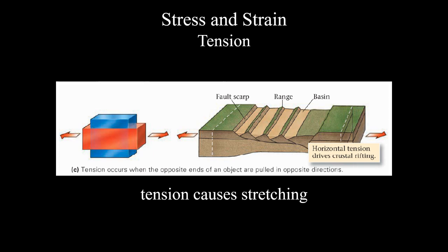With a divergent plate boundary and tensional stress, the opposite occurs: the crust stretches and thins in the middle, accommodated by normal faulting. You still get mountain ranges forming — not by uplifting rock but by down-dropping valleys that fill with sediment. This is what's happening in the Basin and Range of the southwest US — if you've driven from Denver to San Francisco through Utah and Nevada, you go up a mountain range, into a valley, up a mountain range, into a valley, due to this stretching.